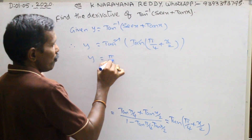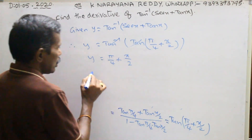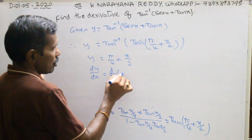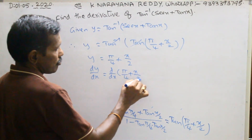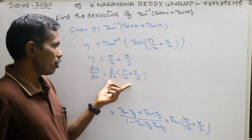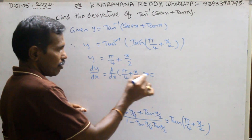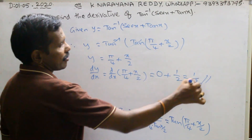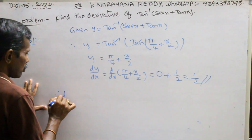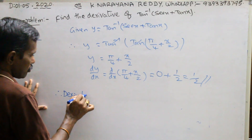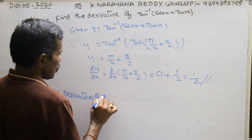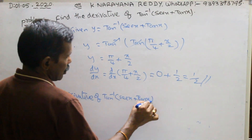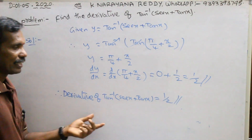So y equals π/4 plus x/2. Now differentiate: dy/dx equals d/dx of (π/4 plus x/2). The derivative of π/4 is zero, and the derivative of x/2 is 1/2. Therefore dy/dx equals 1/2. So the derivative of tan inverse(sec x plus tan x) equals 1/2. That is the required answer.